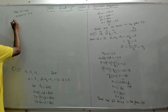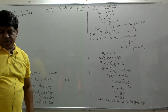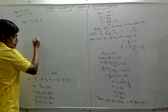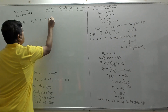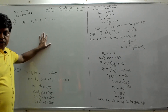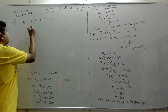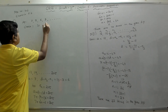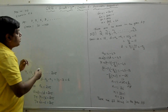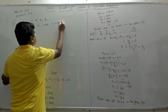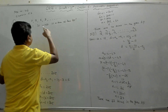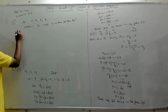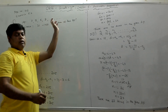Problem 6 says: check whether −150 is a term of the AP 11, 8, 5, 2, ... We have to check whether −150 is a term of this AP.